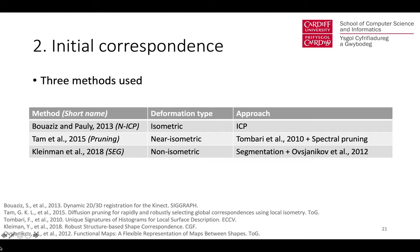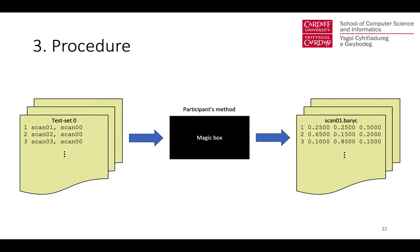The third method, referred to as SEC, computes region-level correspondences using heat kernel signatures as descriptors, which are clustered, and point-to-point correspondence is computed using a variant of the functional mapping method. The participants take the dataset with pairwise scans, work out the correspondences, and submit results as barycentric coordinates of a source point and the location on the target surface matching individual vertices on the source surface.